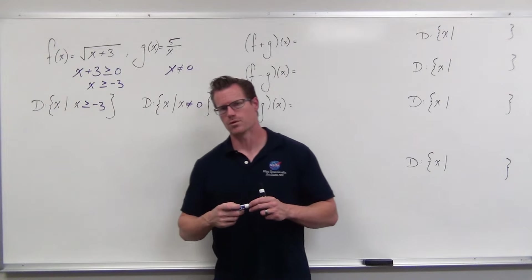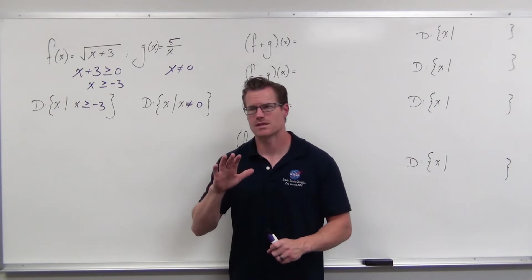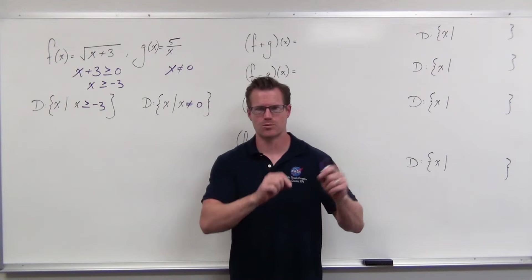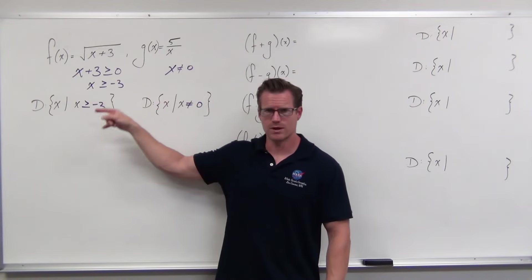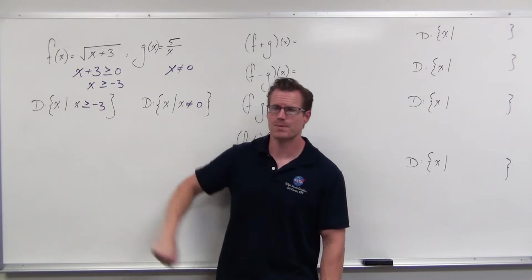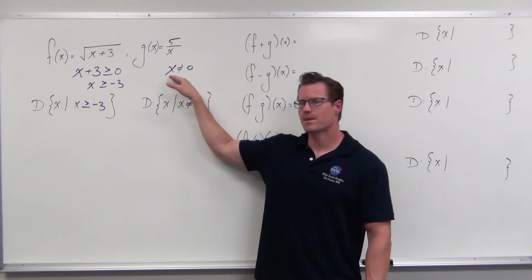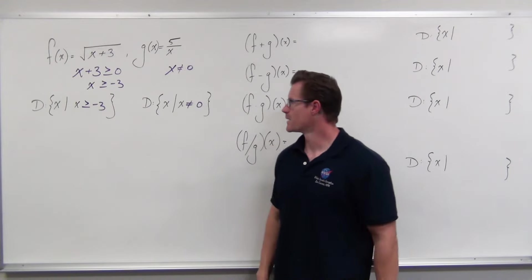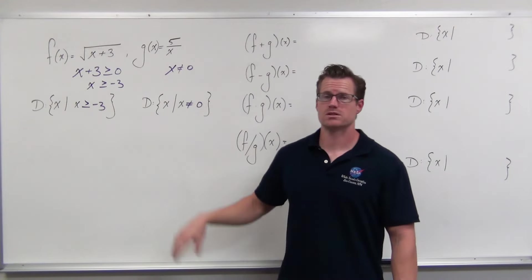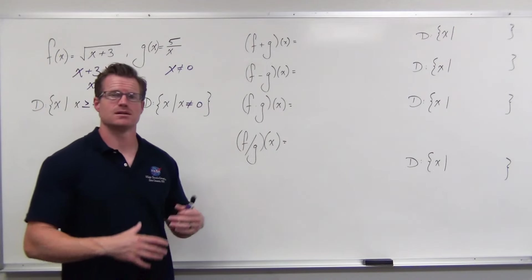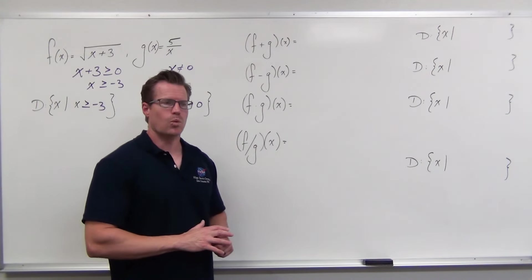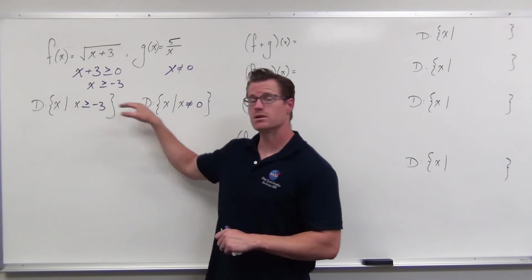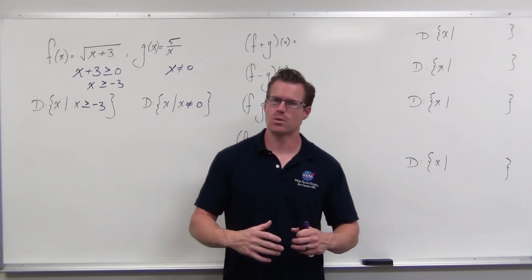So when we look at square roots, we think: what inputs will make this function give us real number defined outputs? For square roots, you keep them positive, solve it, and those are the numbers that give you real numbers out. For fractions, denominators cannot equal zero. These two domains are going to follow us for every single one of these operations, and we might get some more restrictions — but we never ever cancel away domain restrictions.